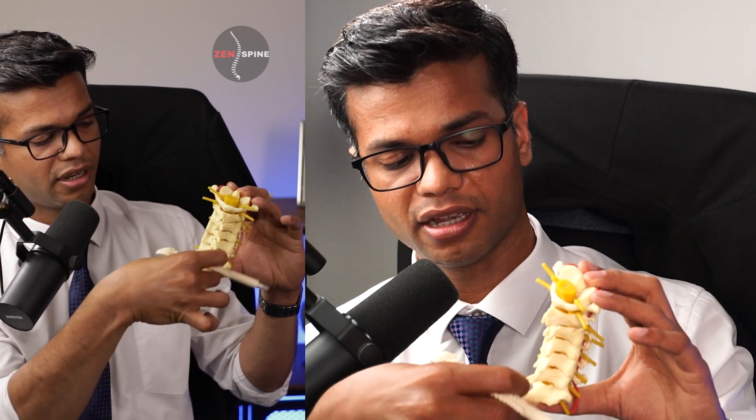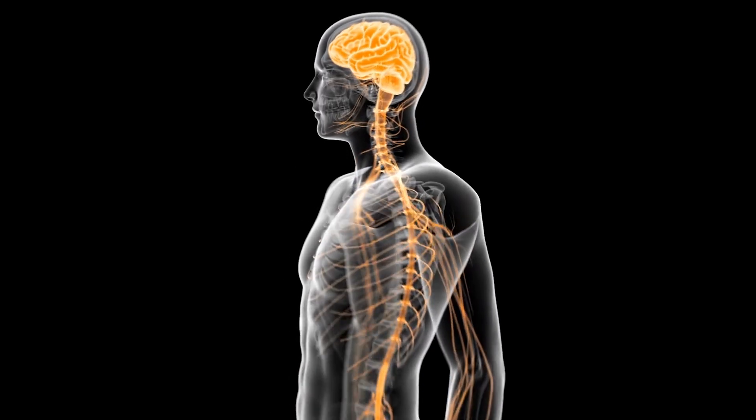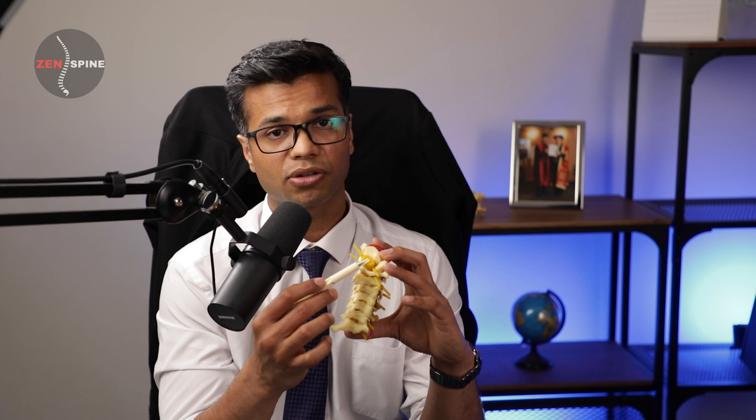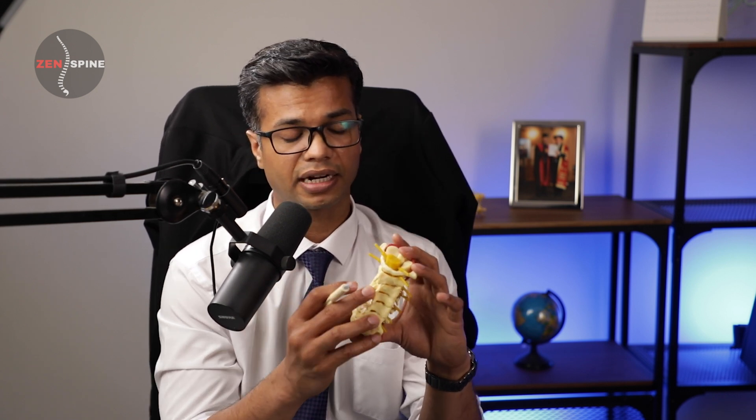If this progresses, the spinal cord — traveling in the continuous channel behind the vertebrae — can become compromised. The spinal cord communicates between your brain and the rest of the body, so if it is pinched or tightened, that hinders that communication. This can present as worsening balance, impaired hand dexterity, dropping objects, changes in handwriting, inability to button or unbutton clothes, funny sensations or pins and needles in your hands, and even loss of bowel or bladder control.